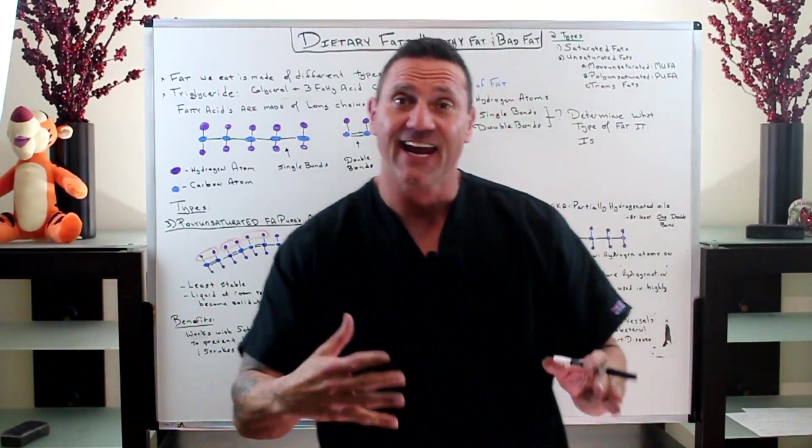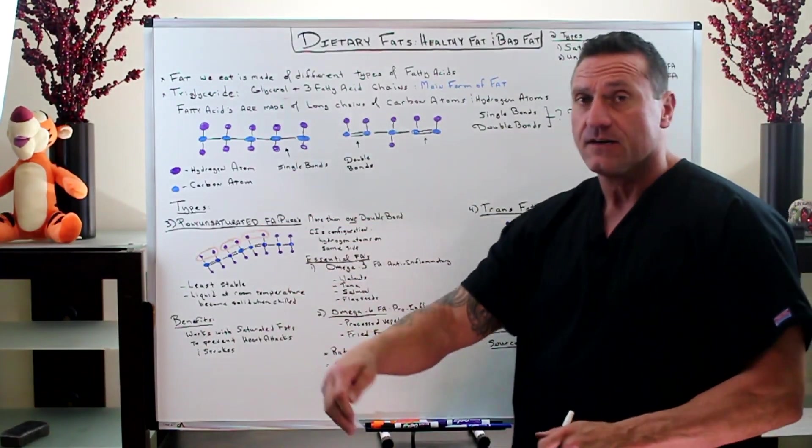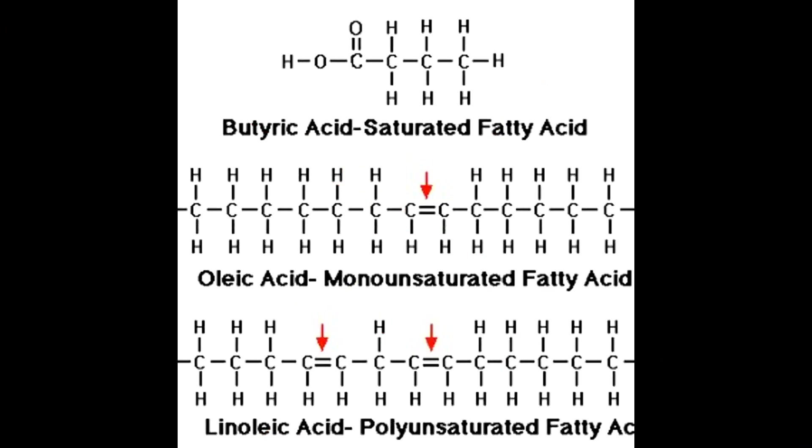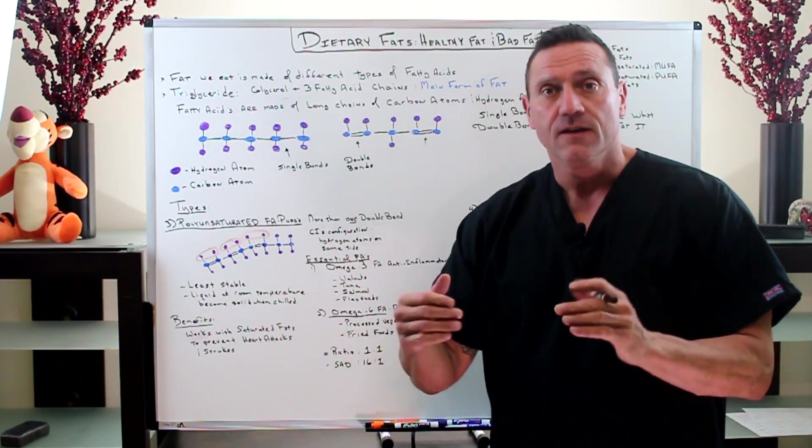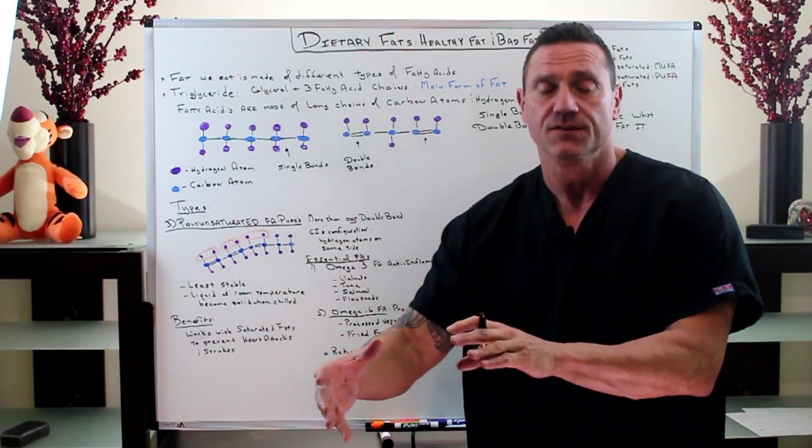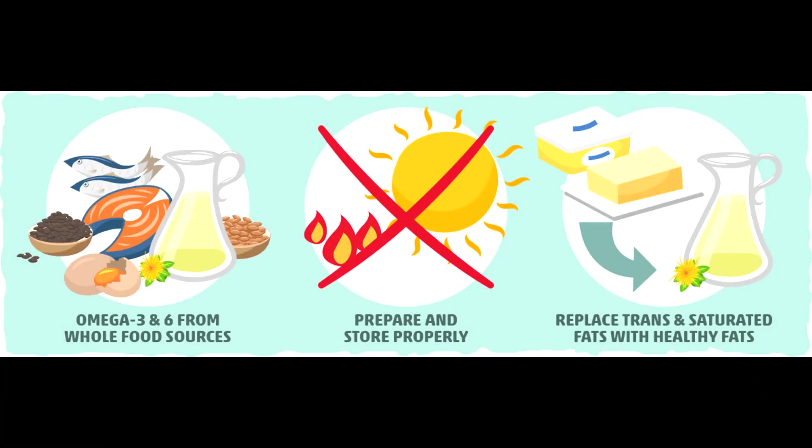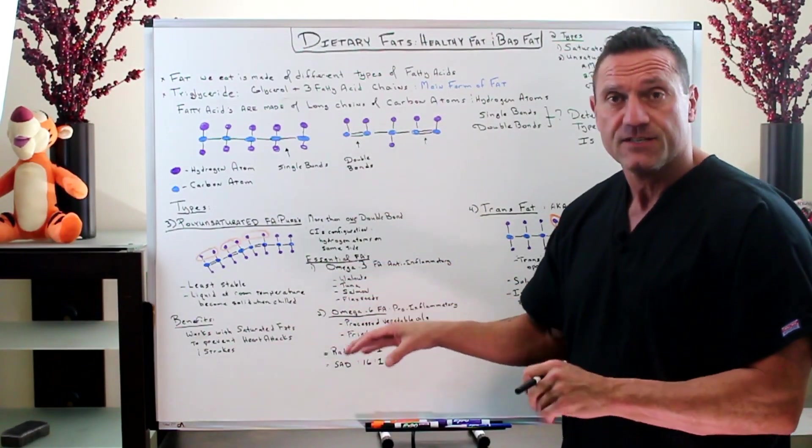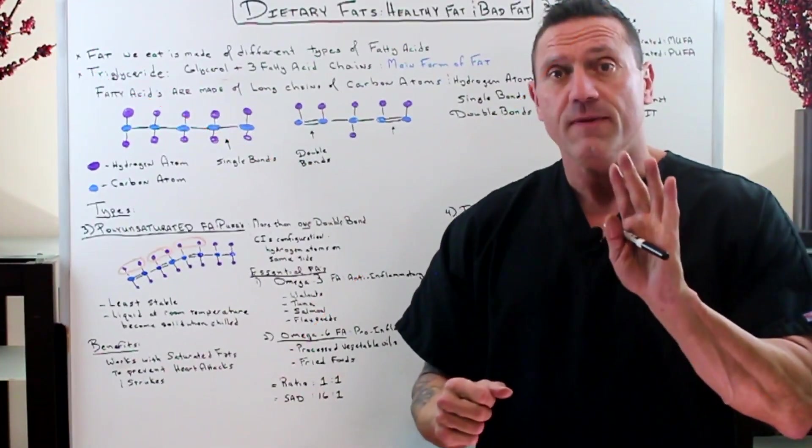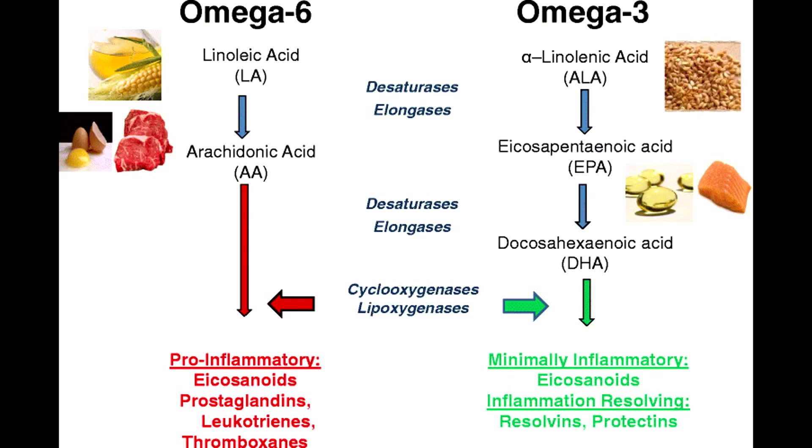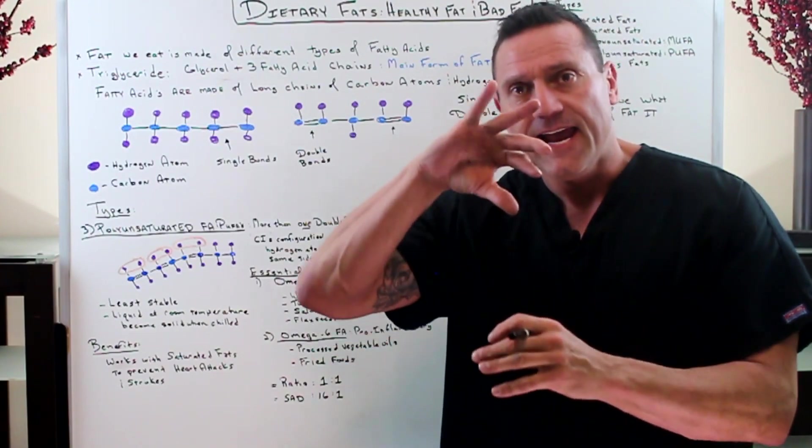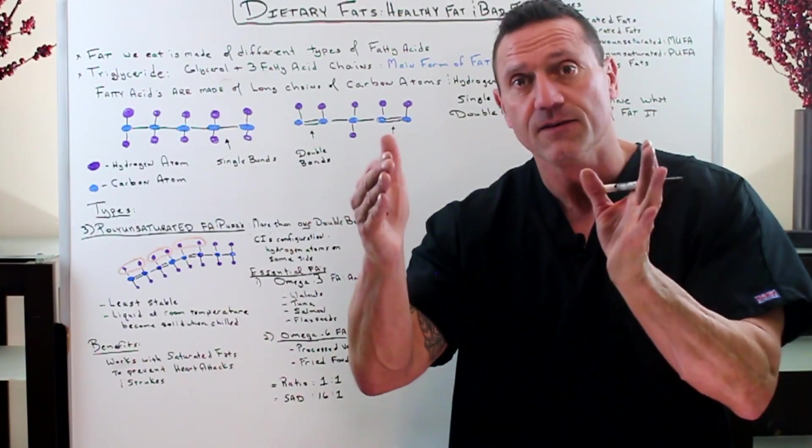So you got saturated fat and monounsaturated fatty acids. Let's talk about the other one. Let's talk about polyunsaturated fatty acids and the deadliest of them all, trans fat. When it comes to polyunsaturated fatty acids, otherwise known as PUFAs, polyunsaturated means it has more than one double bond. It is in the cis conformation because the hydrogen atoms are on the same side. They're least stable, liquid at room temperature, but they become solid when chilled. Let's break it down even more because you got the polyunsaturated fatty acids which break down to the essential fatty acids.